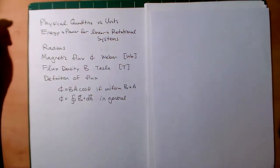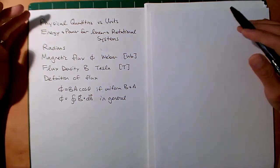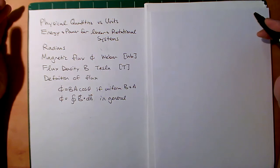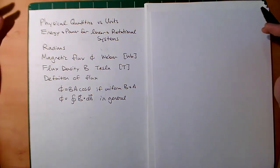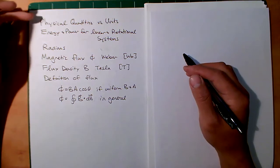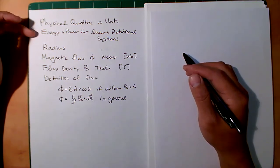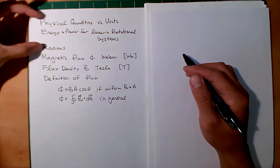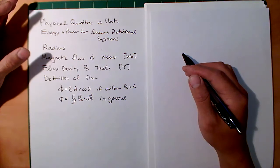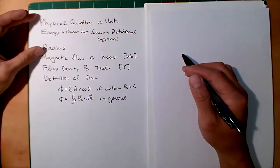Hi, this is your instructor, Evan Chang-Soo, and this is our first lecture in ET350, electrical machinery. In today's lecture, we're going to do a review — you've seen this before in ET250 — physical quantities versus units, also energy and power for linear and rotational systems and radians. This is all review stuff, but I want to bring it up to the surface. I know it's been a long summer, so we want to get all these things nice and fresh.